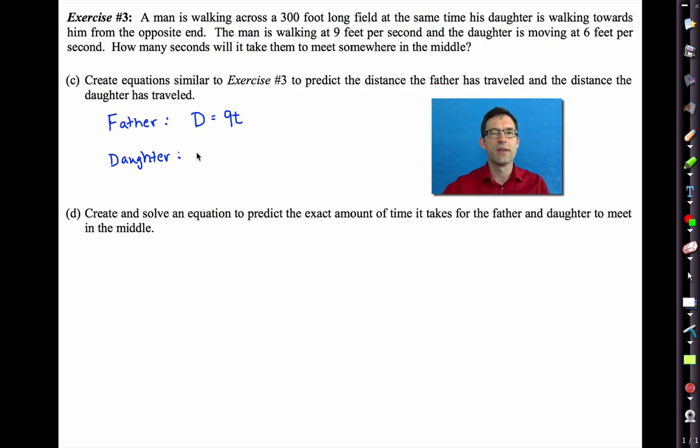So why don't you write down the distance the daughter has traveled? That should be easy. The distance the daughter has traveled is 6t. Finally, letter D says create and solve an equation to predict the exact amount of time it takes for the daughter and father to meet in the middle. So why don't you pause the video now and see if you can figure that out. Go all the way. Create an equation. Solve the equation and tell me how much time it takes for those two to meet in the middle.